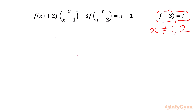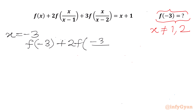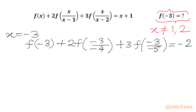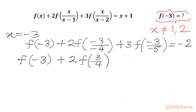Now f(−3) is required, so I will check our equation at x = −3. We get f(−3) + 2·f((−3)/(−3−1)) + 3·f((−3)/(−3−2)) = −3 + 1 = −2. Simplifying: f(−3) + 2·f(3/4) + 3·f(3/5) = −2.